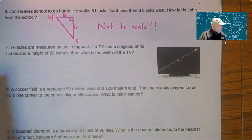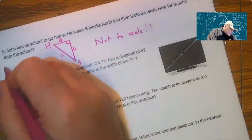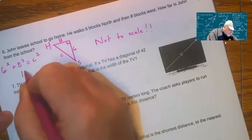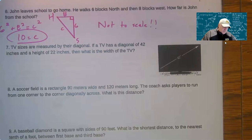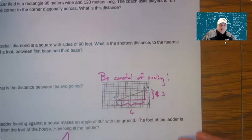And so how far is John from the school? Well, you need to do six squared plus eight squared equals and when you do that, you will get 10. All right. So a lot of this is just literally about setting up a right triangle.